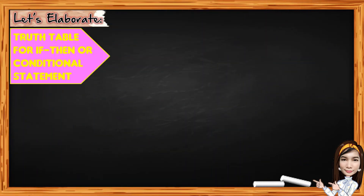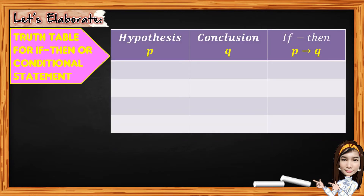Next, we have the truth table for if-then or conditional statements. Given the hypothesis P and conclusion Q, we have the if-then or if P, then Q — our P implies Q. If the hypothesis is true and the conclusion is true, the if-then statement is always true.